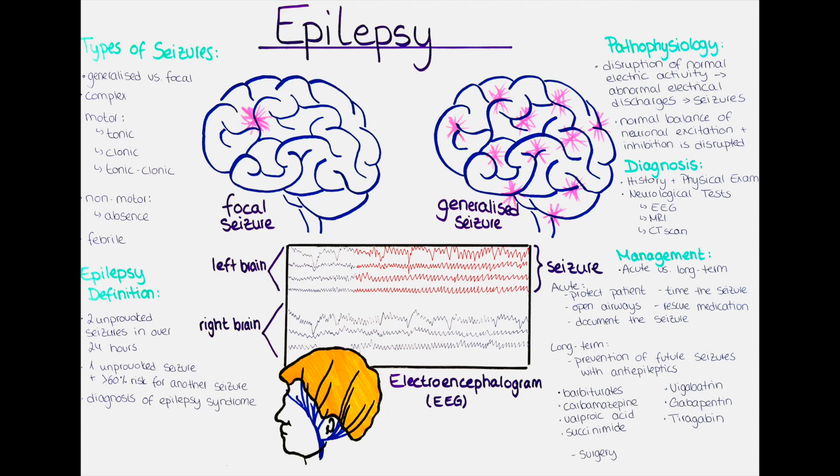Some of the newer anti-epilepsy drugs are vigabatrin, gabapentin, and tiagabine. In some cases, surgical intervention or other non-pharmacological treatments may be recommended. Surgical options include removing the hippocampus and amygdala, performing a temporal lobe resection, or removing the area of the brain responsible for the seizure. These surgeries are an option for patients in whom pharmacological treatment is unsuccessful. It is important for doctors to closely monitor the patient's response to treatment and adjust medication as needed.